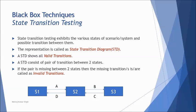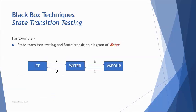Let's take an example quickly to understand the same concept of how valid and invalid transitions can be determined. We are taking an example of water here, assuming that there are three different states of water: ice, liquid form that is water, and vapor.